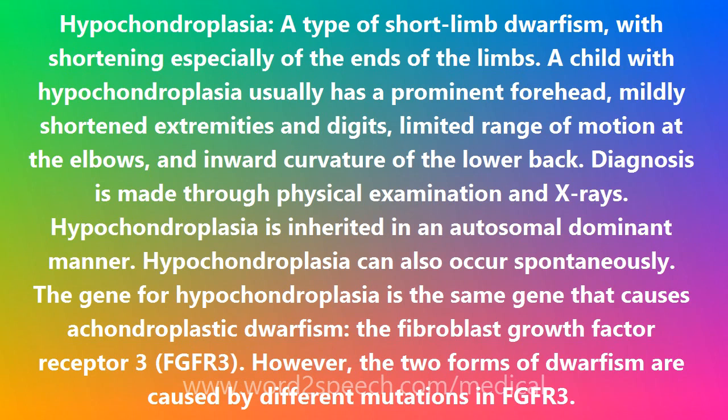The gene for hypochondroplasia is the same gene that causes achondroplastic dwarfism: the fibroblast growth factor receptor 3, FGFR3. However, the two forms of dwarfism are caused by different mutations in FGFR3.